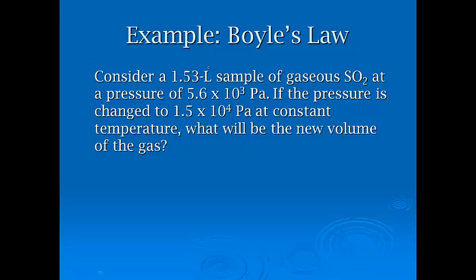Okay, so consider 1.53 liter sample of gaseous sulfur dioxide at a pressure of 5.6 times 10 to the third pascals. If the pressure is changed to 1.5 times 10 to the fourth pascals at constant temperature, what will be the new volume?